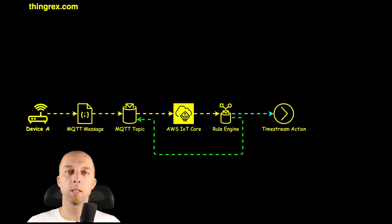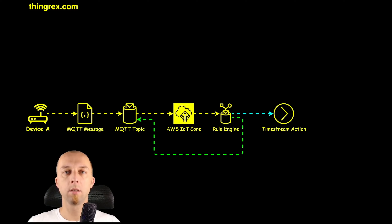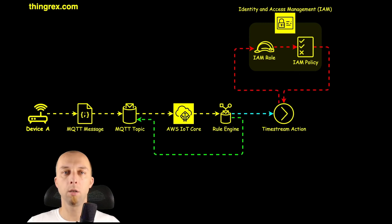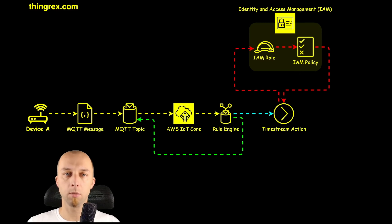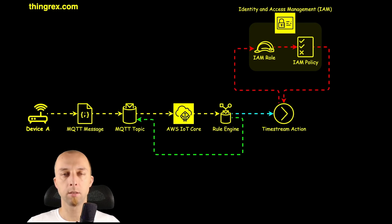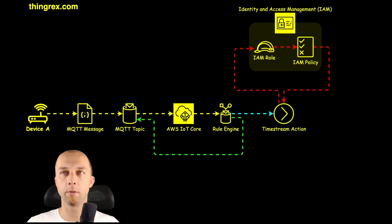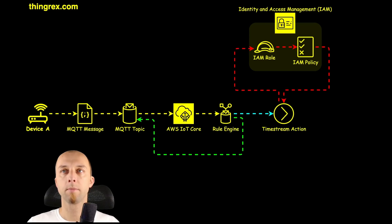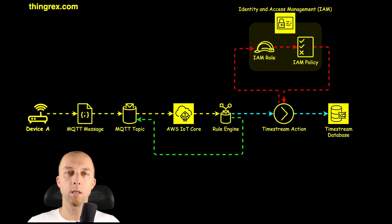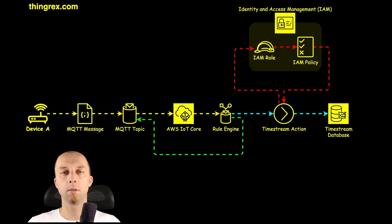For instance, that might be a Timestream action. Every action has an IAM role attached to it, because we need to allow AWS IoT to communicate with other AWS services, and we manage that using roles with IAM policies. In this example, the IAM policy allows AWS IoT to insert records into the Timestream database.